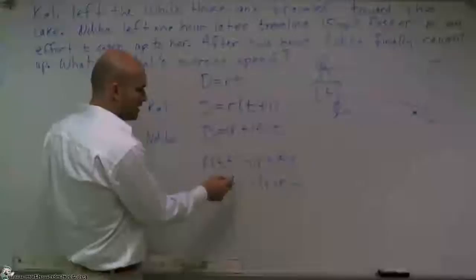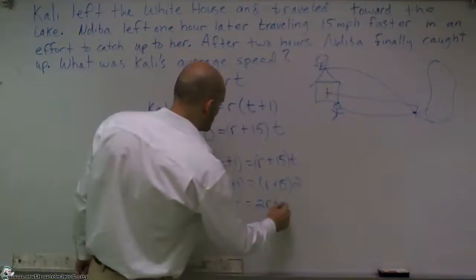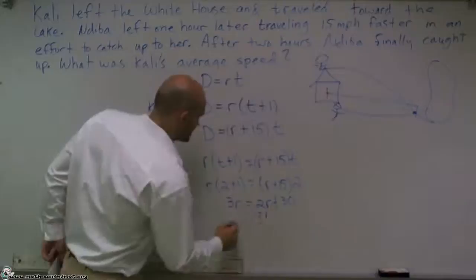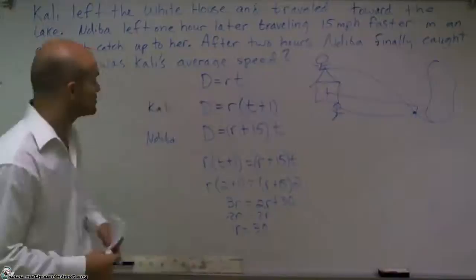Now I can just do a little work. 2 plus 1 is 3, 3 times R is 3R equals 2R plus 30. Now solving for my variable, I subtract 2R and I get R equals 30 miles per hour.